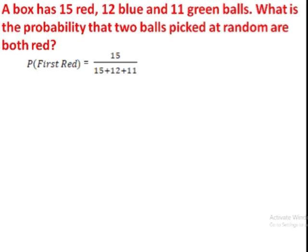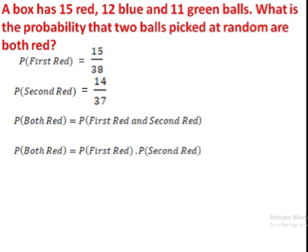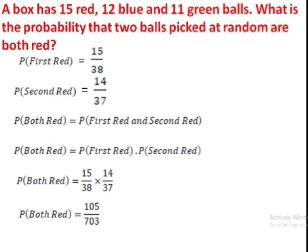Now let's do some examples. A box has 15 red, 12 blue, and 11 green balls. What's the probability that two balls picked at random are both red? The probability of picking the first red is 15 over 38. Now we have to pick the second red ball. How many red balls are left? 14. So 14 over 37 is the probability of picking the second red ball. The probability of picking the first red ball and the second red ball is calculated by multiplying the individual probabilities, which is 15 on 38 times 14 on 37 which gives you 105 on 703.